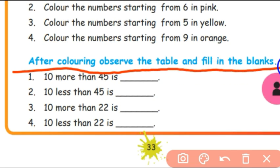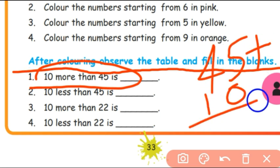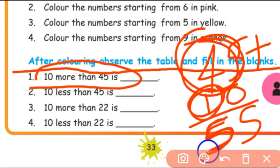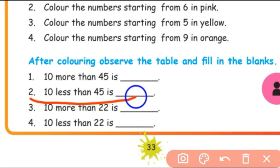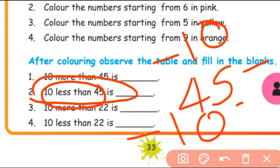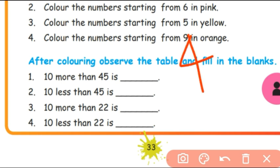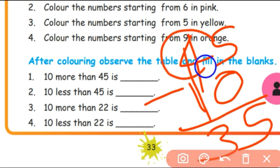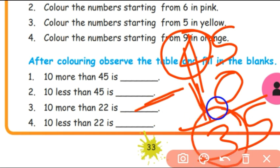After coloring, observe the table and fill in the blanks. 10 more than 45: 10 more means plus 10, so 45 plus 10 equals 55. In the tens place, 4 increases by 1 to become 5, giving 55. Next, 10 less than 45: 45 minus 10 equals 35. The tens digit 4 decreases to 3, so the answer is 35.